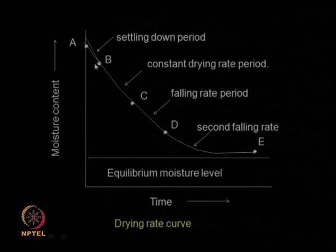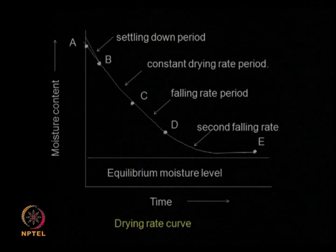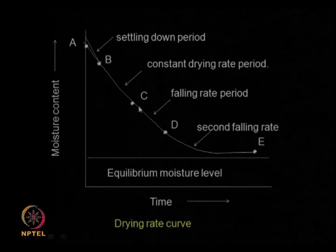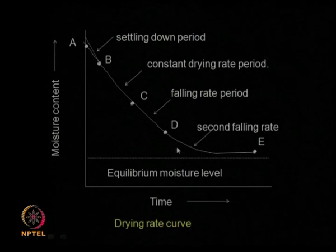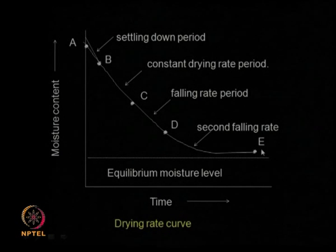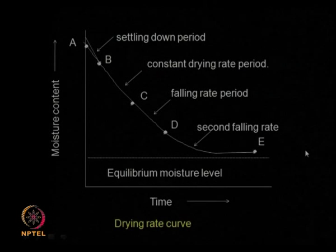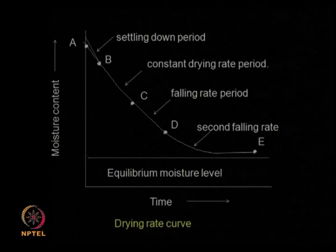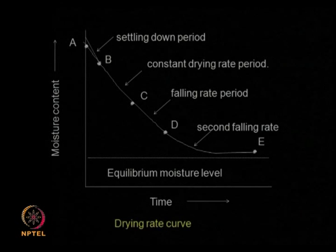When designing a dryer and calculating drying time, you have two periods: the constant drying rate period and the falling rate period. As drying continues, the material cannot give up moisture after some point — this is the equilibrium moisture content, which depends on the percentage relative humidity as well as the type of material (how hygroscopic it is, how porous it is). For example, leather has a higher equilibrium moisture content than soap. The moisture content finally settles down to the equilibrium moisture content — this is the drying rate curve.